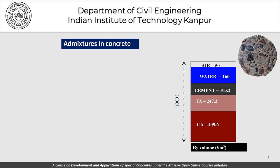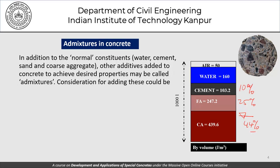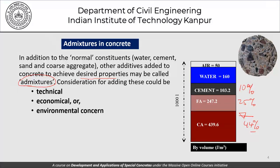This is taken from an example we have already solved. By volume, in a 1000-litre pitcher: 50 litres of air, 160 litres of water, 103.2 litres of cement — about 10% — approximately 25% of fine aggregate and about 44% of coarse aggregate. This is our normal distribution of materials in normal concrete, that is, concrete which does not have any admixtures. Other additives are at times added to concrete to achieve desired properties — these are called admixtures. The reasons for adding them could be technical, economical, or environmental.